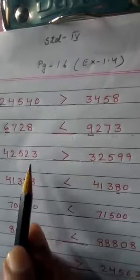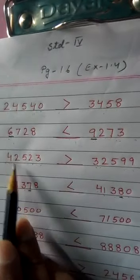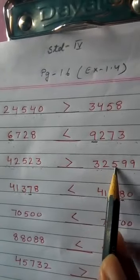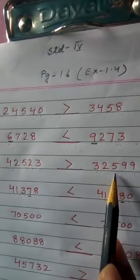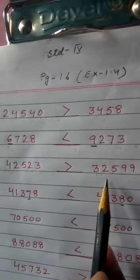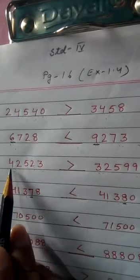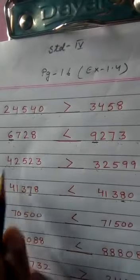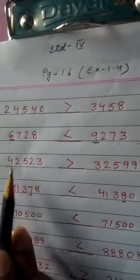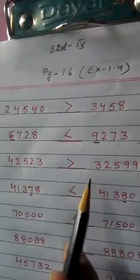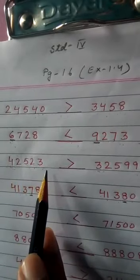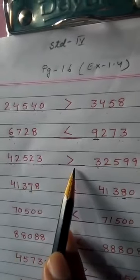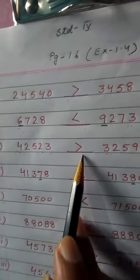Now we will count the digits: 1, 2, 3, 4, 5 — this is a 5-digit number. 1, 2, 3, 4, 5 — this is also a 5-digit number. Both are 5-digit numbers. Now we will compare: here it is 4 and here it is 3, so 4 is greater. So 42523 is greater. Done correct?